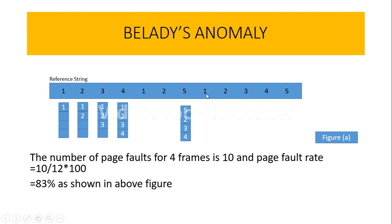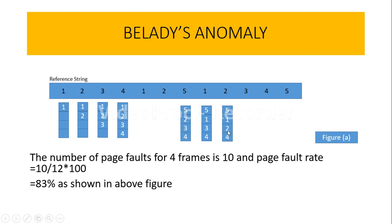Once again when moving to the next bit, which is 1, we replace the oldest page. Checking the previous 4 operations: 5 is the newest, 2 is the oldest compared to 3 and 4. So we replace page 2 with page 1. Then when moving to the next bit which is 2, we need to load it onto the frame, so we remove the oldest — page 3 — and replace 3 with 2.